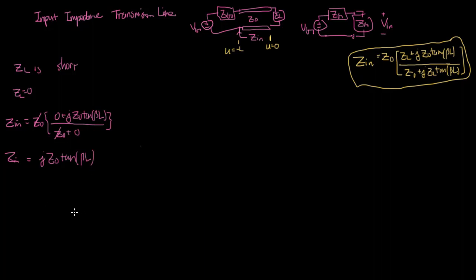The extreme values of tangent are plus or minus infinity, so if we plot Z_in vs. length, we get a tangent-shaped curve. Since there's a j factor, this is purely imaginary — pure reactance. By adjusting the length, you can achieve any reactance value between -∞ and +∞, giving you a purely adjustable reactance assuming good control of the length.